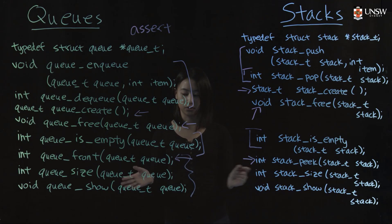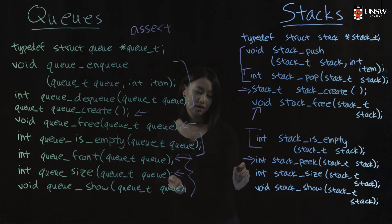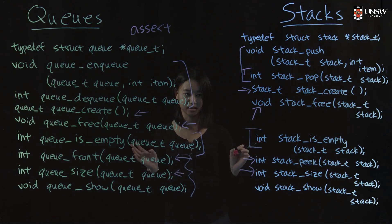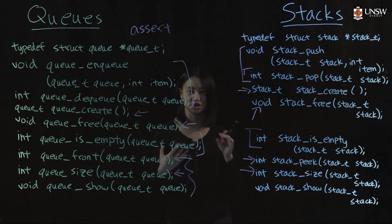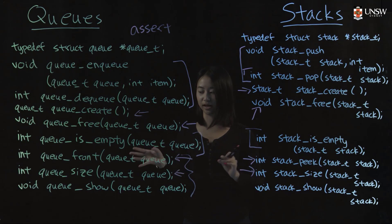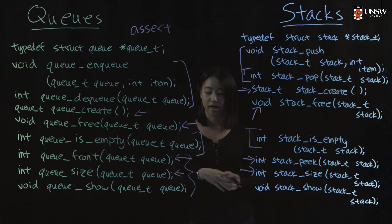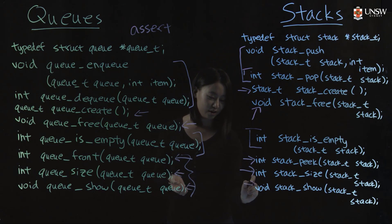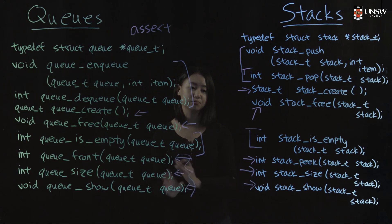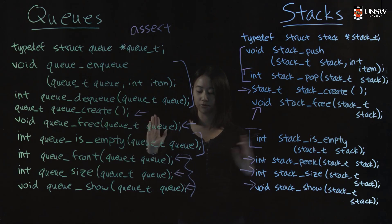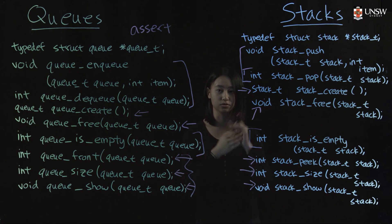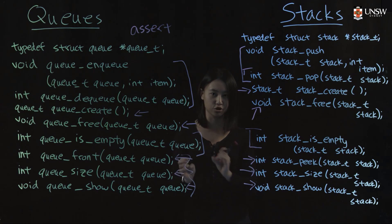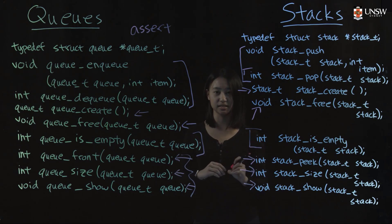The other useful functions are size functions. These are useful if you just want to know how many more items you have left to process, or if you want to change your behavior depending on the size of the queue or the stack. And the last one is something you will love to have when debugging — the show function, which prints out a representation of the queue or the stack to standard output so you can make sure everything is in the right order.